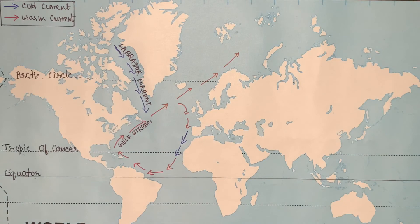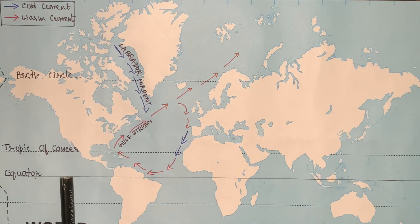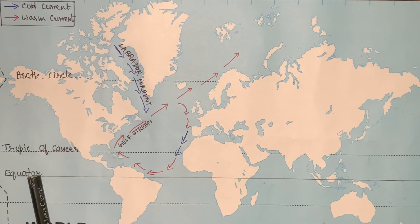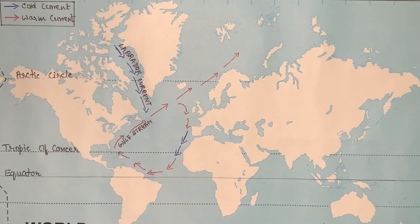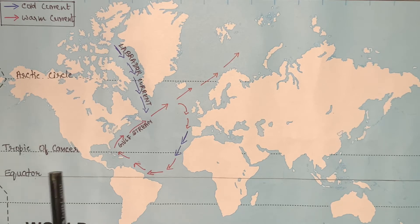Temperature at the equator is the maximum, which goes on decreasing as one moves from the equator towards the poles. There is a negative correlation between temperature and the density of water. This means that higher the temperature — that is, on the equator — the density of water will be lower.